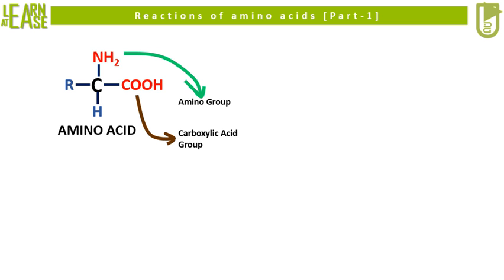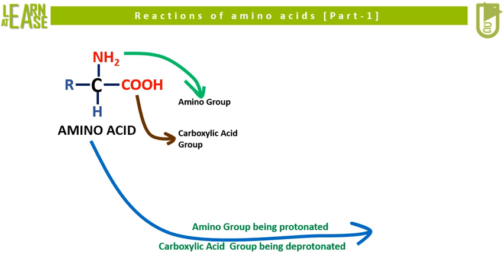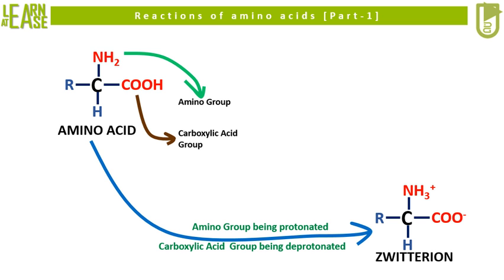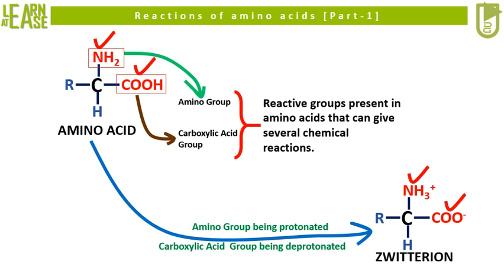Amino acid exists as a zwitterion, where the amino group gets protonated and the carboxylic group gets deprotonated. The amino group and the carboxylic group in the amino acids participate in several chemical reactions, which will be discussed in this video.